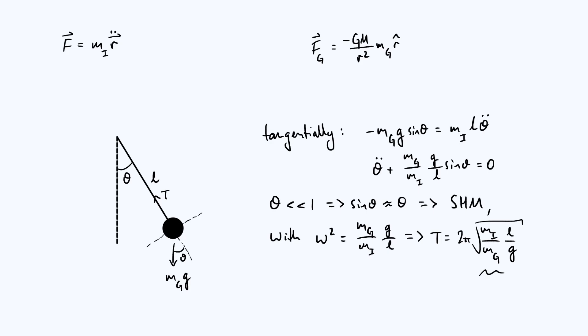If the ratio mi to mg varies between different materials, then each pendulum will have a slightly different period and they'll go out of phase, even if you give them the same initial conditions.